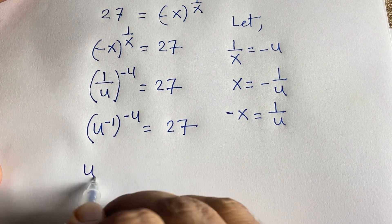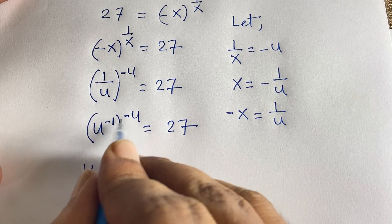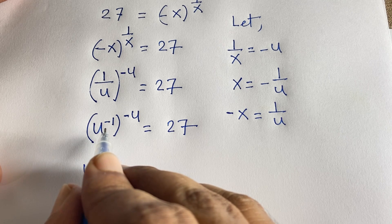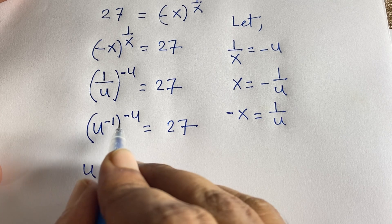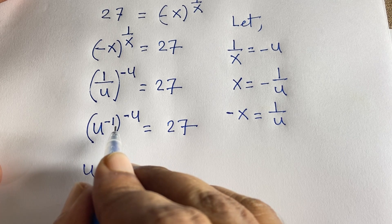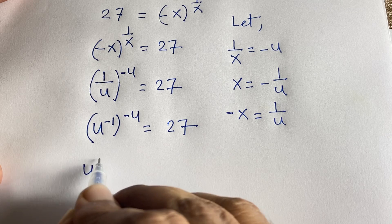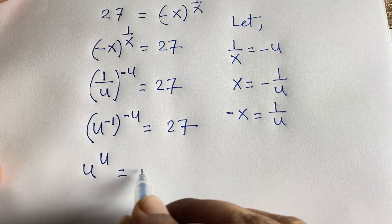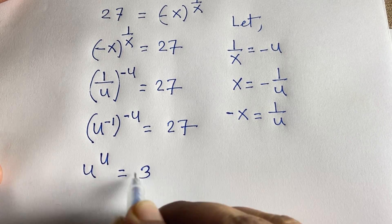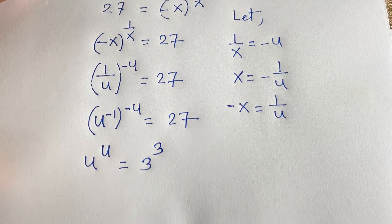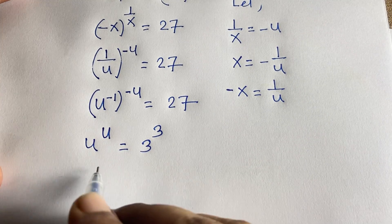Applying the power rule (a^n)^m = a^(nm): the negatives multiply to give a positive, so u^u = 27. Since 27 = 3^3, we have u^u = 3^3.